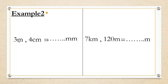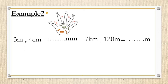The next example: 3 meters, 4 centimeters equals how many millimeters? Here we need to change both units. Remember: between kilometer and meter is 1,000; between meter and decimeter is 10; between decimeter and centimeter is 10; between centimeter and millimeter is 10. From large to small — multiply. From small to large — divide.